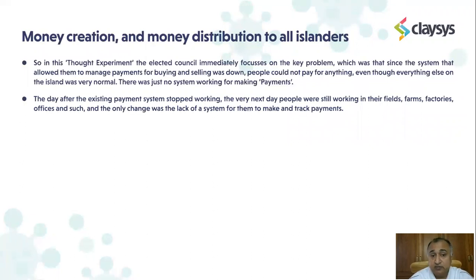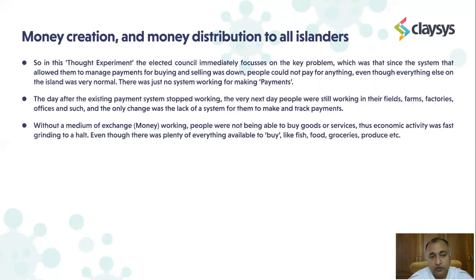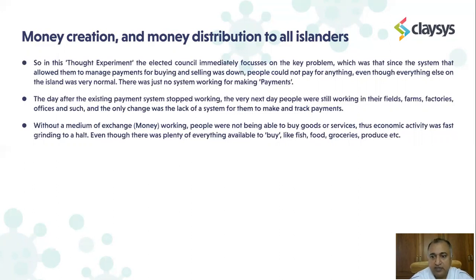The day after the existing payment system stopped working, people were very normal — able to go work in their fields, farms, factories, and offices. Nothing changed there. The only change was the lack of a system for making and tracking payments. Without a medium of exchange — money — people were not able to buy goods or services. Economic activity was quickly grinding to a halt, even though there was plenty of everything available to buy: fish, food, groceries, produce. Since nobody could make a payment, they couldn't buy, and because sellers couldn't get money, they were afraid to sell.